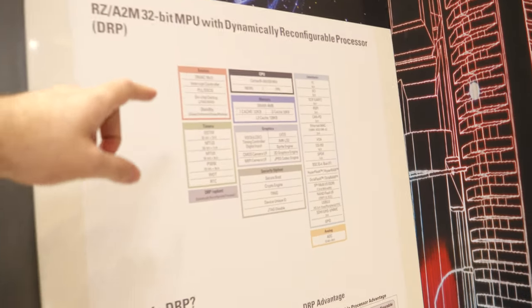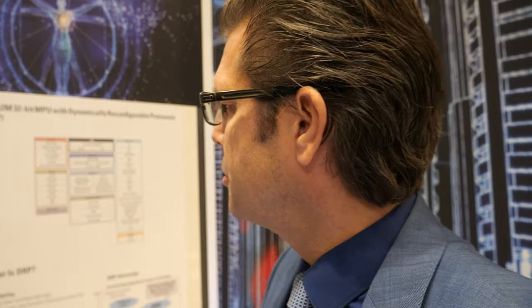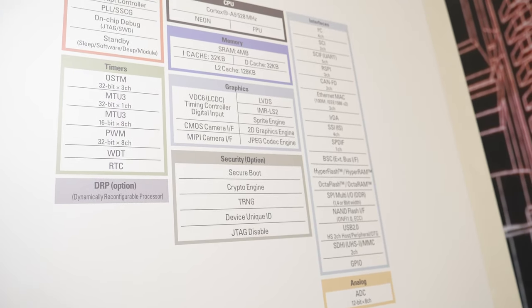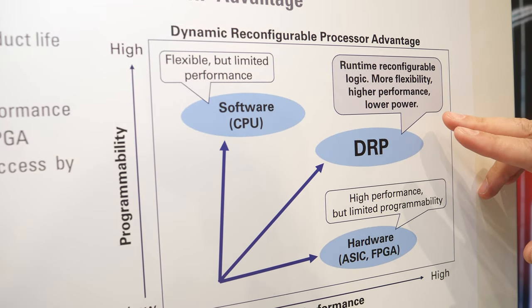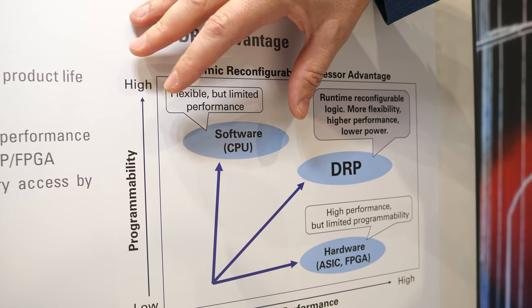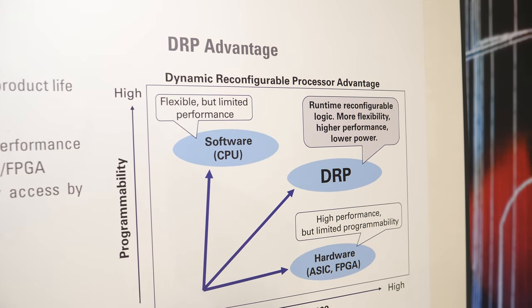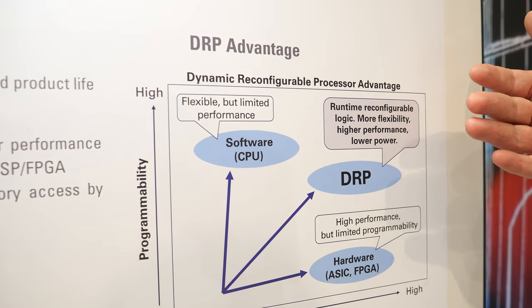Looking at the chip, it says ARM Cortex-A9. How do you achieve low power consumption? That's our differentiation — we have the DRP on board, the Dynamically Reconfigurable Processor. Basically, the DRP gives you hardware performance but you configure it in software, so you have software flexibility. You program in C code but you get hardware performance. This allows you to program high-performance libraries in software for things like image preprocessing.